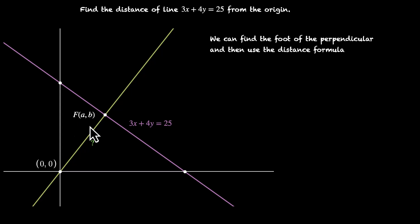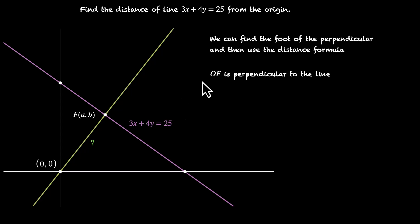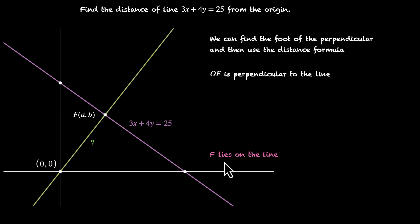We need two things that this point satisfies. The first one is that OF is perpendicular to the line 3x + 4y = 25 — this gives us one equation. The second is that F lies on this line as well; F lies on 3x + 4y = 25 — this gives us the second equation.